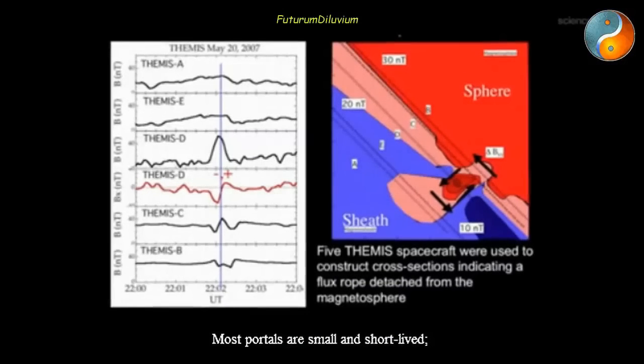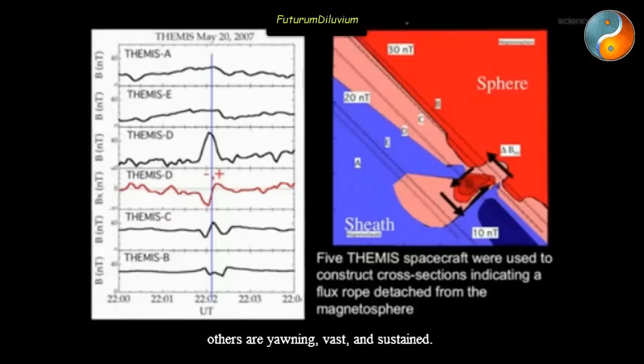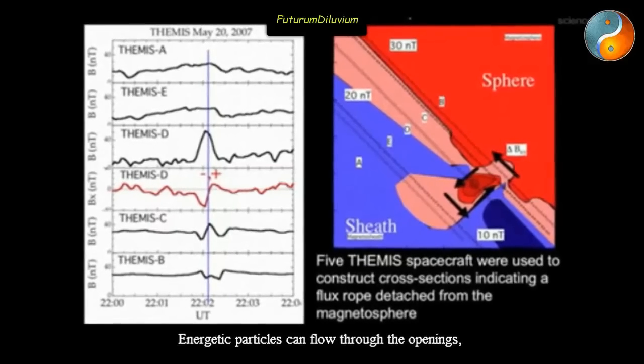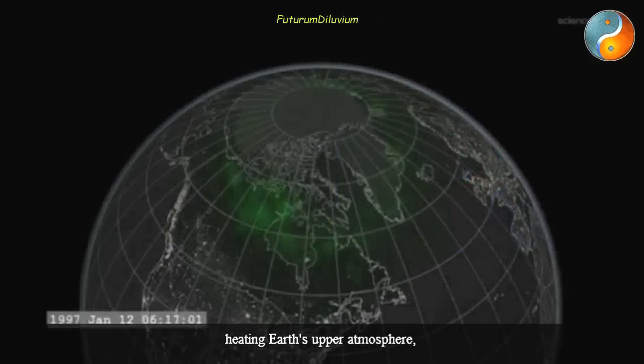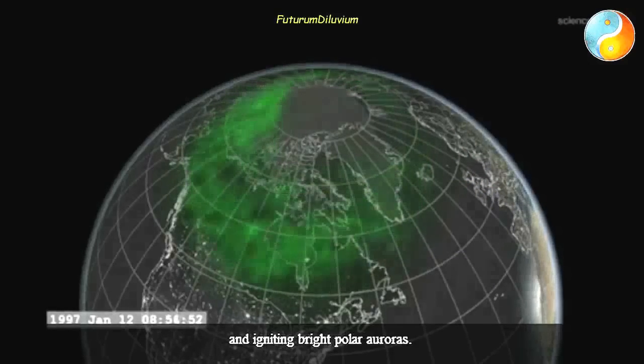Most portals are small and short-lived. Others are yawning, vast, and sustained. Energetic particles can flow through the openings, heating Earth's upper atmosphere, sparking geomagnetic storms, and igniting bright polar auroras.